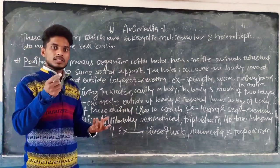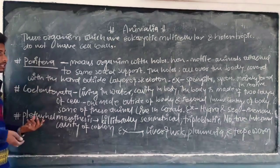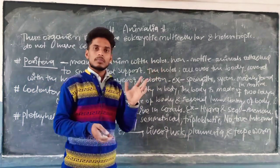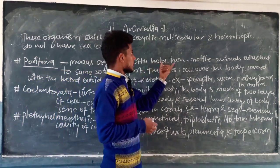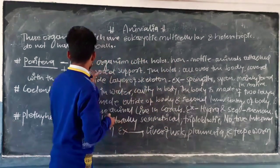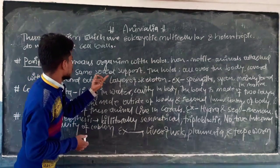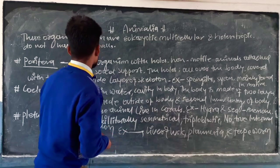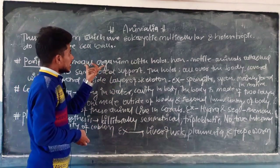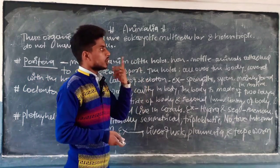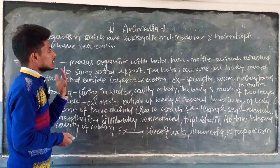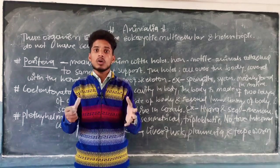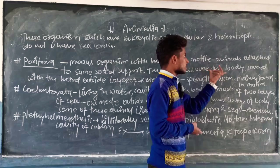I will revise two times: Porifera, Coelentrata, and Platyhelminthes — their characteristics and examples. So let's see: Porifera means organisms with holes. Porifera means organisms in which holes are present all over the system. They are non-motile animals, attached to the same kind of support — like a stem or substrate.